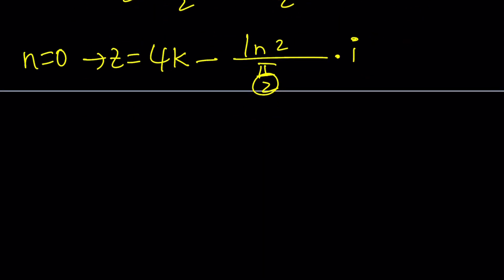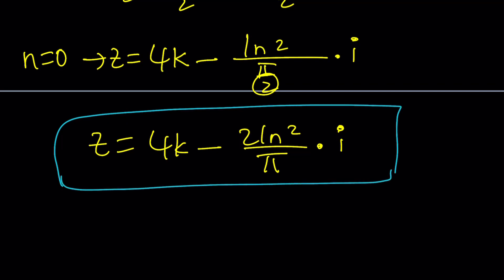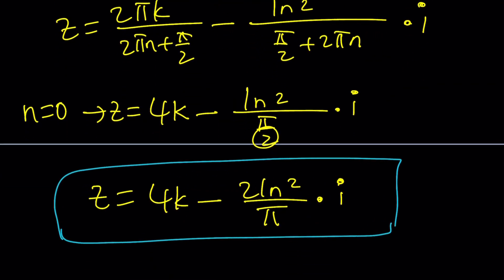Anyway, I can go ahead and flip this. So, write the Z as 4k minus 2 ln 2 over π multiplied by i. And, of course, you can write it as ln 4 too. No big deal. It's pretty much the same thing. So, it looks like this is a simpler version. So, here's the million dollar question.